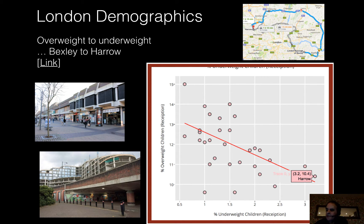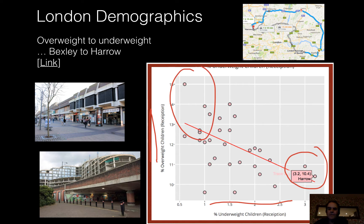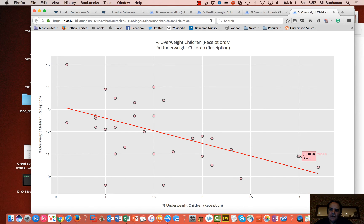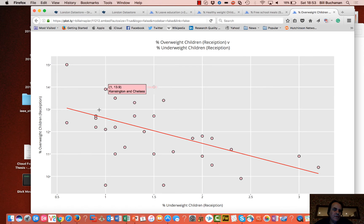If we plot underweight and overweight kids at the first time they enter primary school, we see that generally in more affluent areas kids are more underweight, and in the least affluent areas they tend to be more overweight. There are outliers, and sometimes they are the most interesting because they buck the trend — either improving things or not doing so well. Harrow, Brent and Redbridge have more underweight kids, while others have more overweight kids. Sutton, Kingston upon Thames and Redbridge do well here.